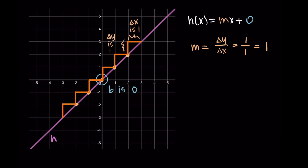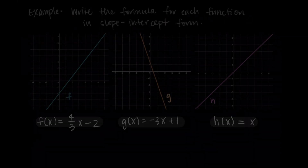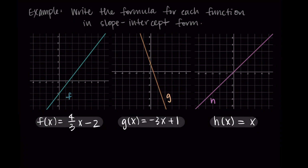So we have h(x) = 1·x + 0, but we simplify this: 1 times x is just x, and plus 0 has no effect, so h(x) = x. You might also see this written as y = x. And that's our introduction to slope-intercept form — those are our three equations from the graphs. Thanks for watching and I'll talk to you in the next one.